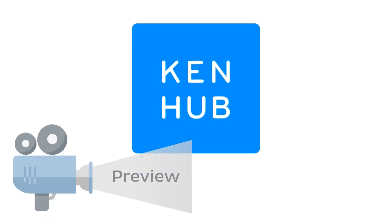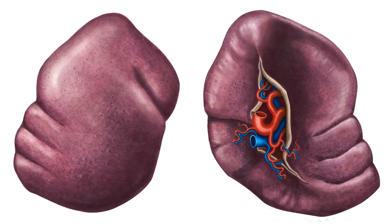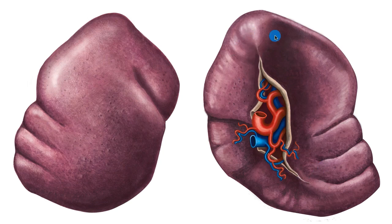Hello everyone, this is João from KenHub and welcome to another anatomy tutorial where this time I'm going to be talking about none other than the spleen. To do so I'm going to be essentially exploring these two images that you see here on the screen — on the left side we're looking at the diaphragmatic surface of the spleen, and on the right side the visceral surface of the spleen.